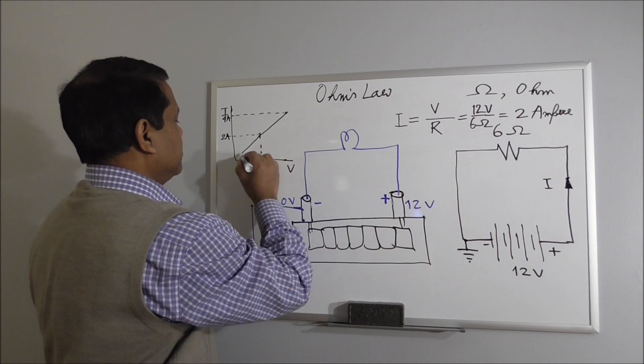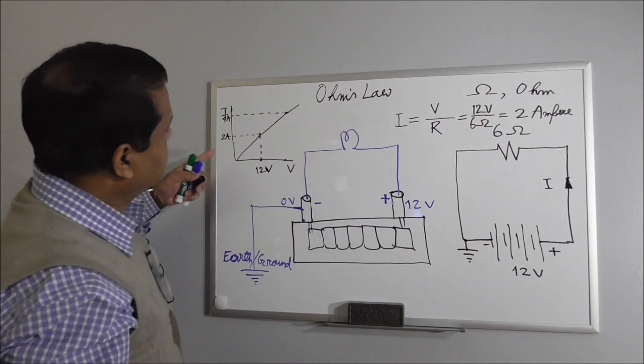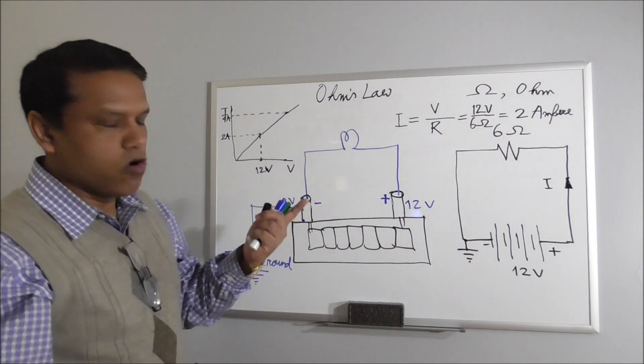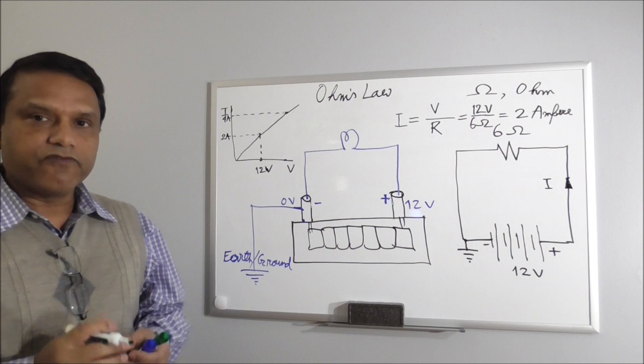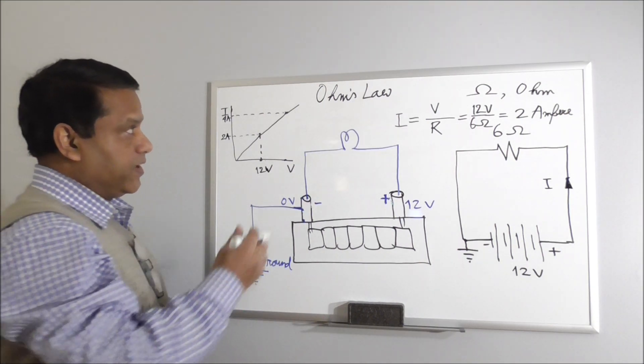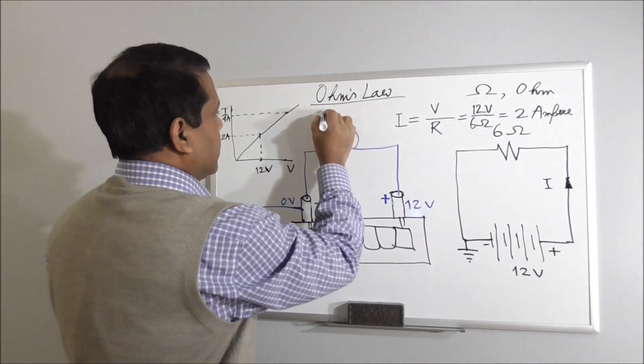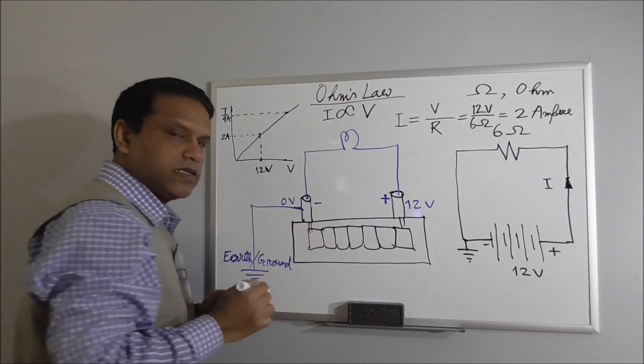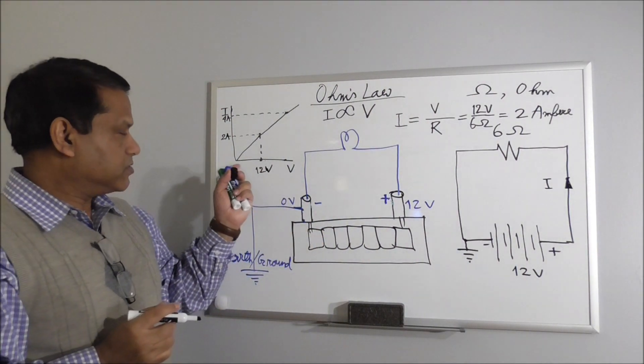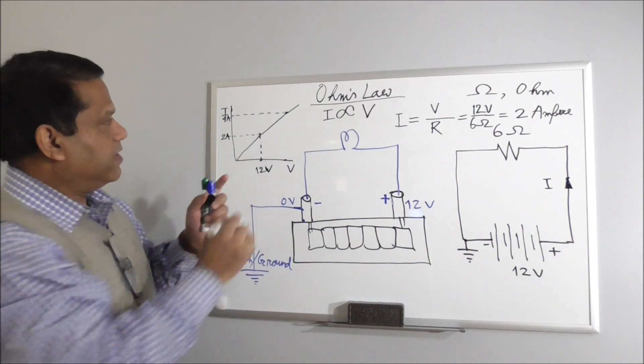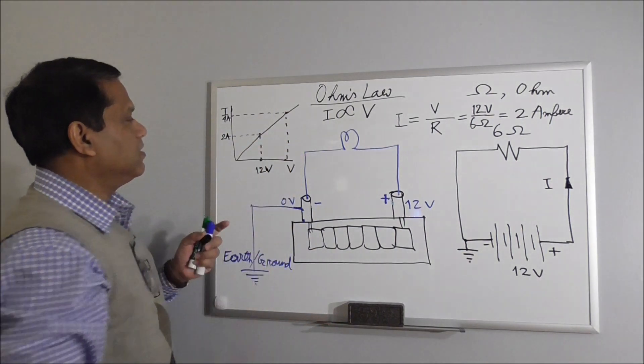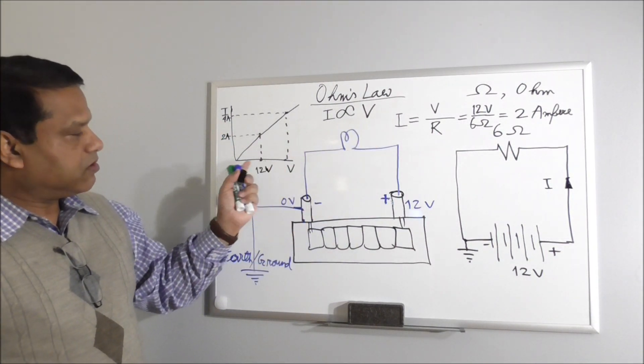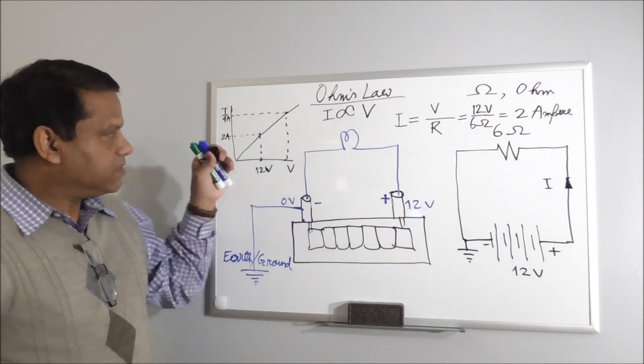That means if you increase voltage, current increases linearly. This is Ohm's Law, very simply. And this is a very powerful law. Some people also express Ohm's Law in another way, that is, current is proportional to voltage. So we are saying voltage is the cause that is causing the current flow. And the effect is current. So the effect is proportional to the cause. So if the cause doubles, the effect will double. This is a linear relationship.